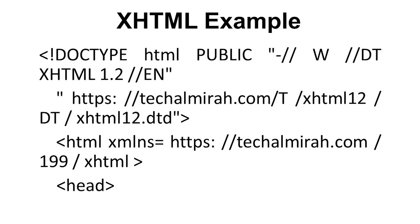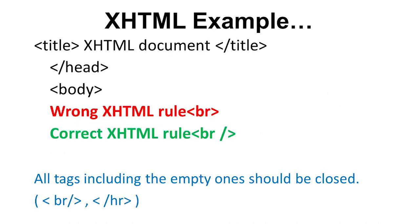This is a basic XHTML example. In the body, we have a wrong XHTML rule for the BR tag — a line break. This is the wrong XHTML rule because all tags, including the empty ones, should be closed in XHTML.